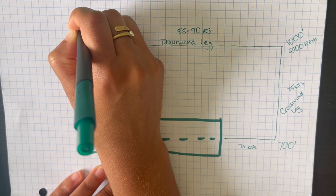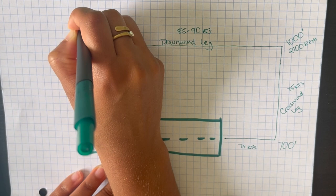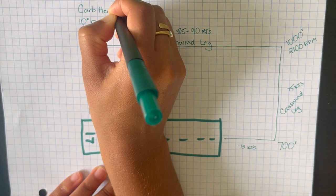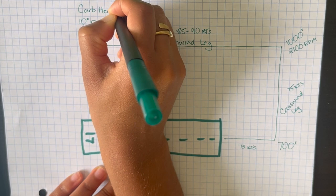You will pull the power back to about 1600 to 1700 RPMs and you are going to maintain about 80 knots. You will put 10 degrees of flaps in, and your plane may or may not have this, but if it does you will put your carb heat on. All of this happens when you're about abeam with the numbers.